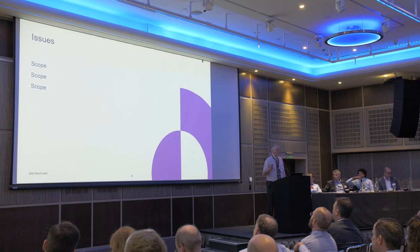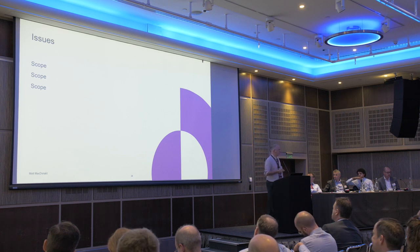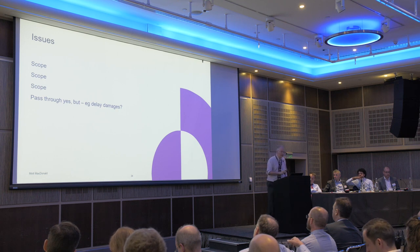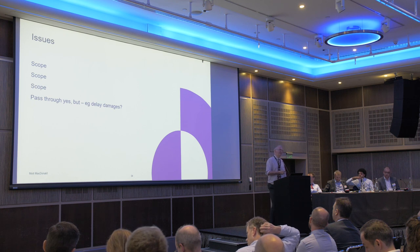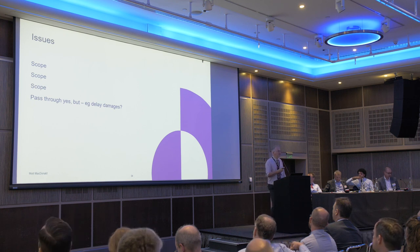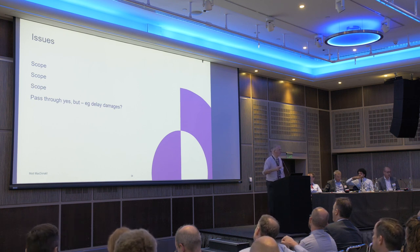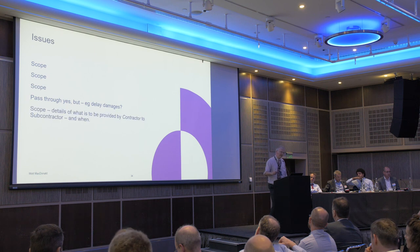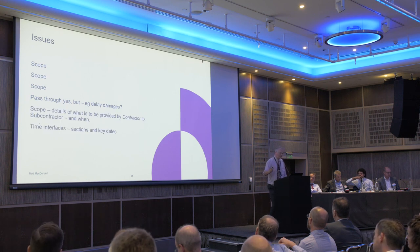What causes problems on all contracts? Scope, scope, scope. Contractors need to realise they are writing contracts — their people need to understand how to write scope. Usual problem: if the contractor has a significant delay damage, can you really pass that through onto all your little subbies, even though those little subbies might well be on the critical path? Is that going to stack up?